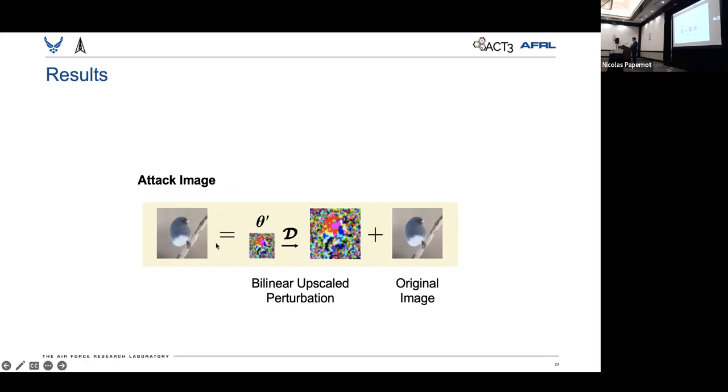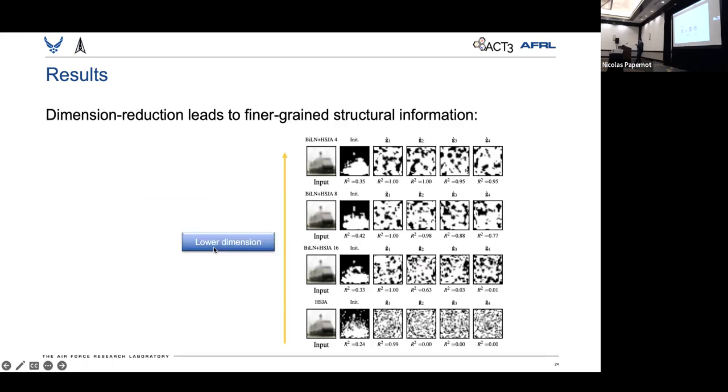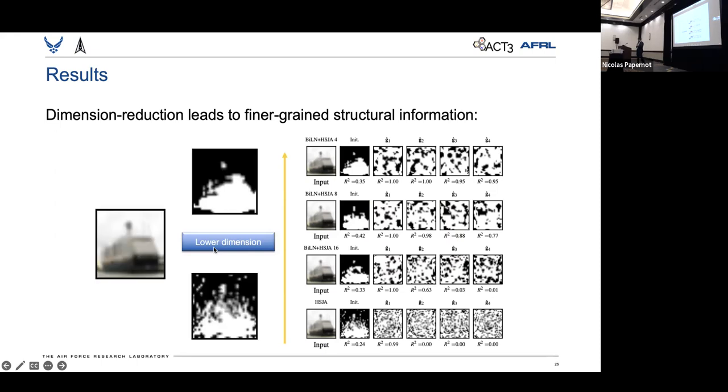Using this very simple modification, we then test the second question, and what we found is that at lower dimensions, so when we have a lower dimension theta prime, we can actually get a better or more refined version of that semantic representation. Effectively, we can find better initial directions that will point towards the manifold. And so as you can see here qualitatively, the lower dimension version of that attack will actually give you cleaner edges around that ship.